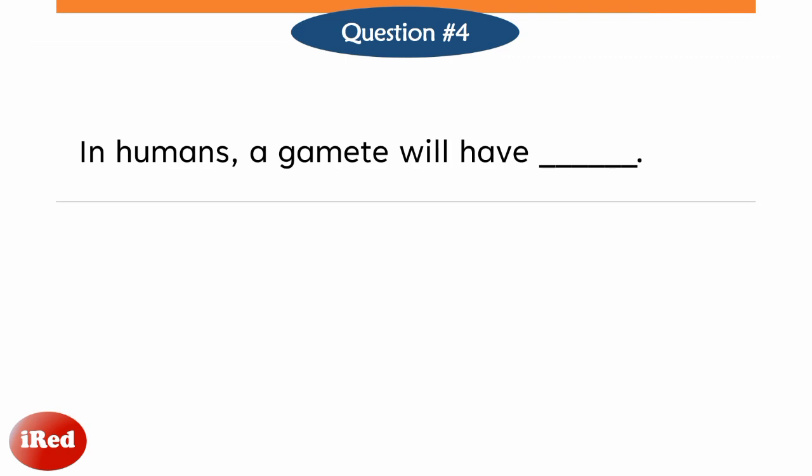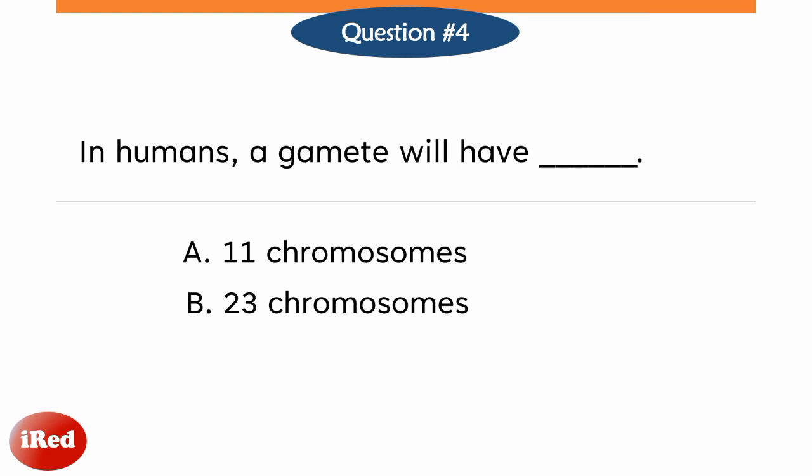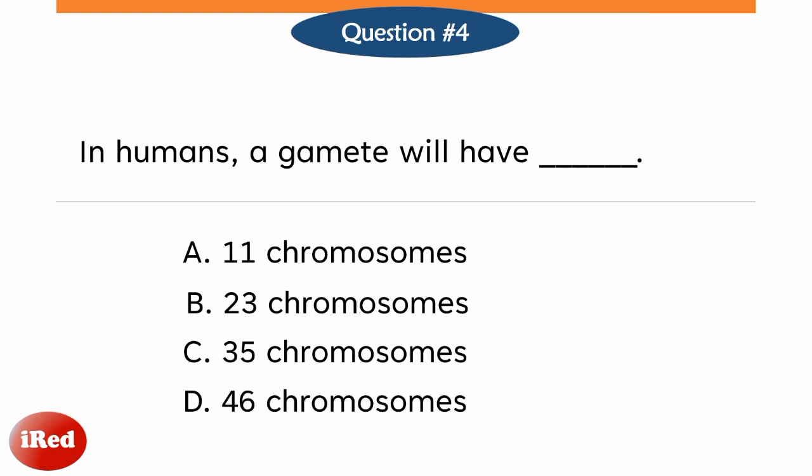Question number four. In humans, a gamete will have: letter A, 11 chromosomes; letter B, 23 chromosomes; letter C, 35 chromosomes; or letter D, 46 chromosomes.